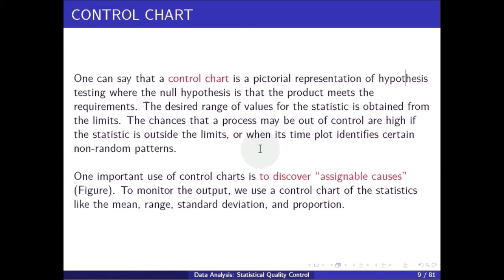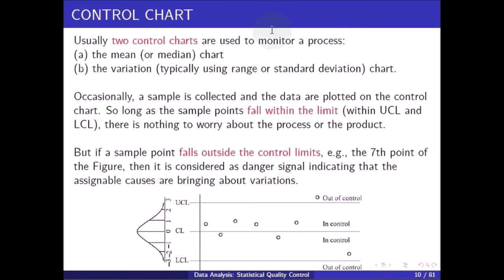To monitor the output, we use a control chart of statistics like the mean, range, standard deviation, and proportion. Usually two control charts are used to monitor a process: the mean chart and the variation chart.